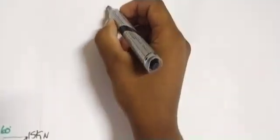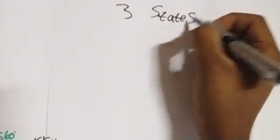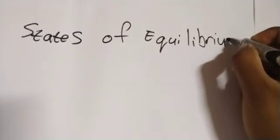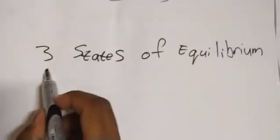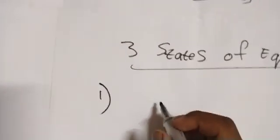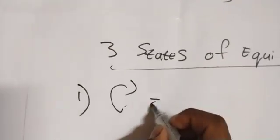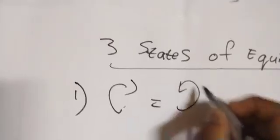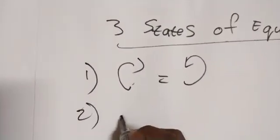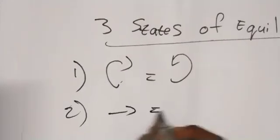We have three states of equilibrium. State one will say clockwise equals anti-clockwise. Number two will say forces to the right will equal forces to the left.